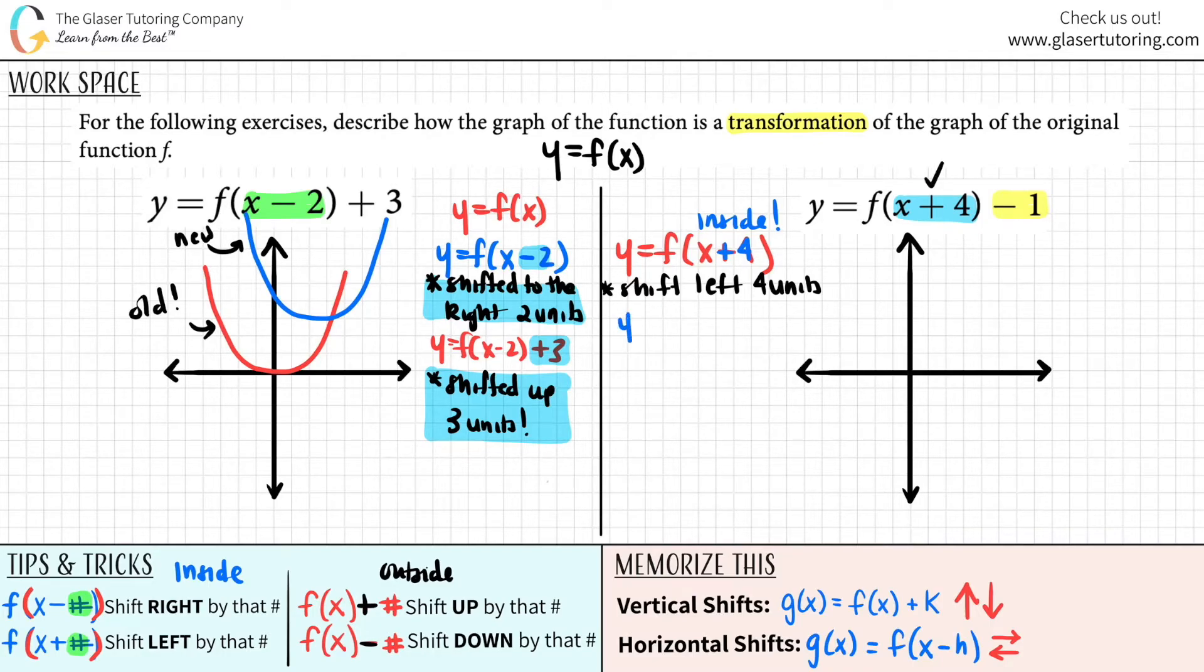Now we just got to take it a step further. What is the minus one at the end mean? This is outside of the function. And those are vertical shifts over here. If you're minusing by a number on the outside, it's a downshift. So you also had to shift down by one unit. And there you go. These are your two shifts.